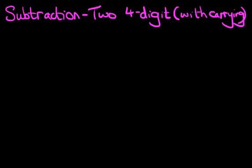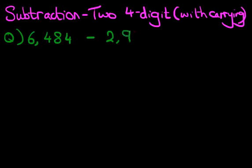Let's have a look at the question we're going to work through. What is 6484 minus 2988?